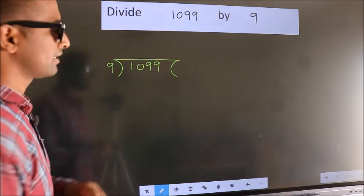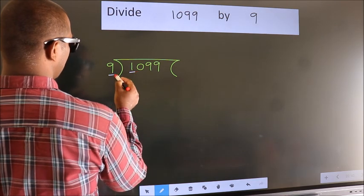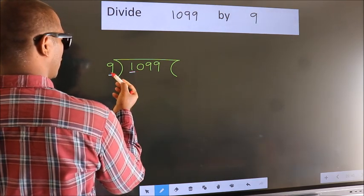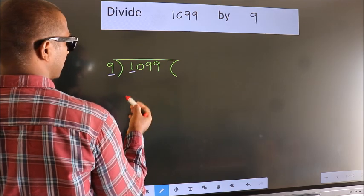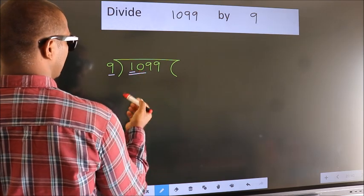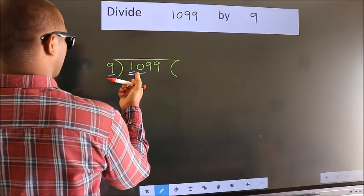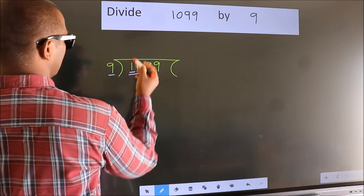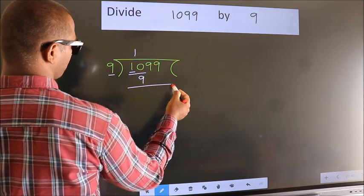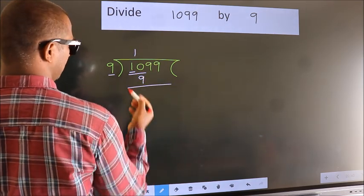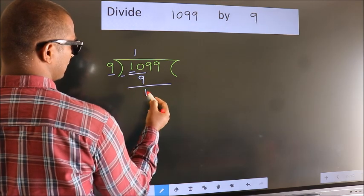Next. Here we have 1, here 9. 1 is smaller than 9, so we should take two numbers: 10. A number close to 10 in the 9 times table is 9 once 9. Now we should subtract. We get 1.